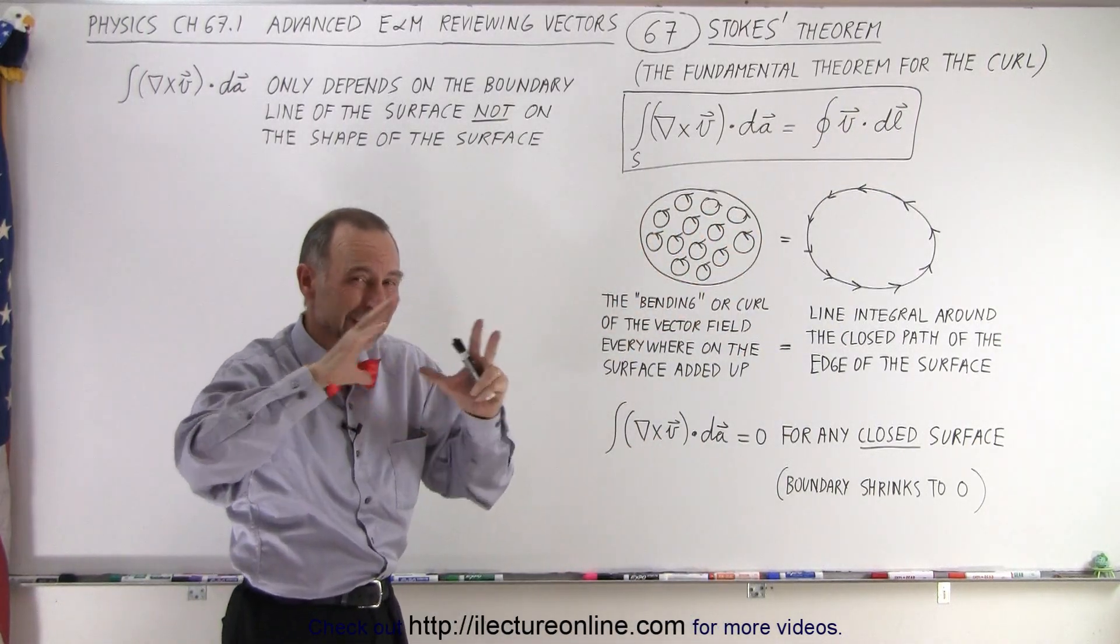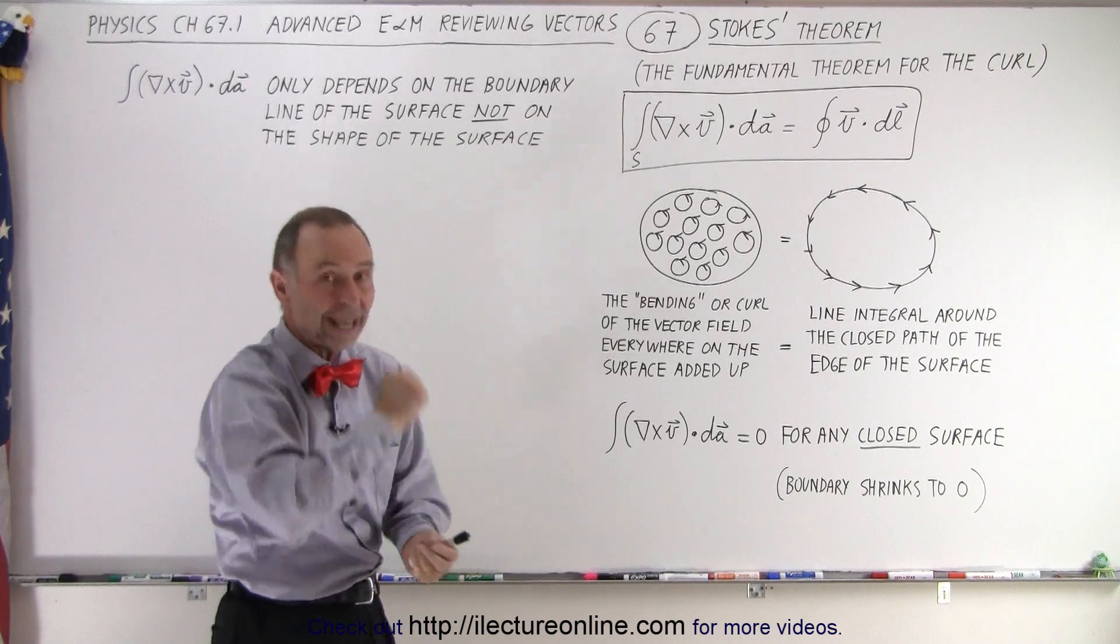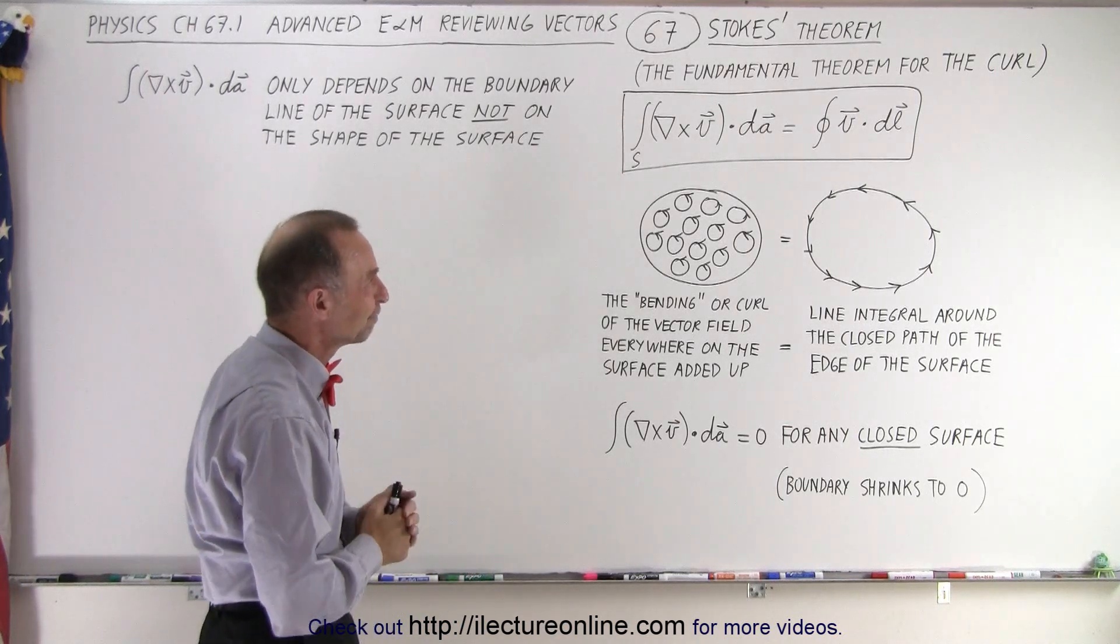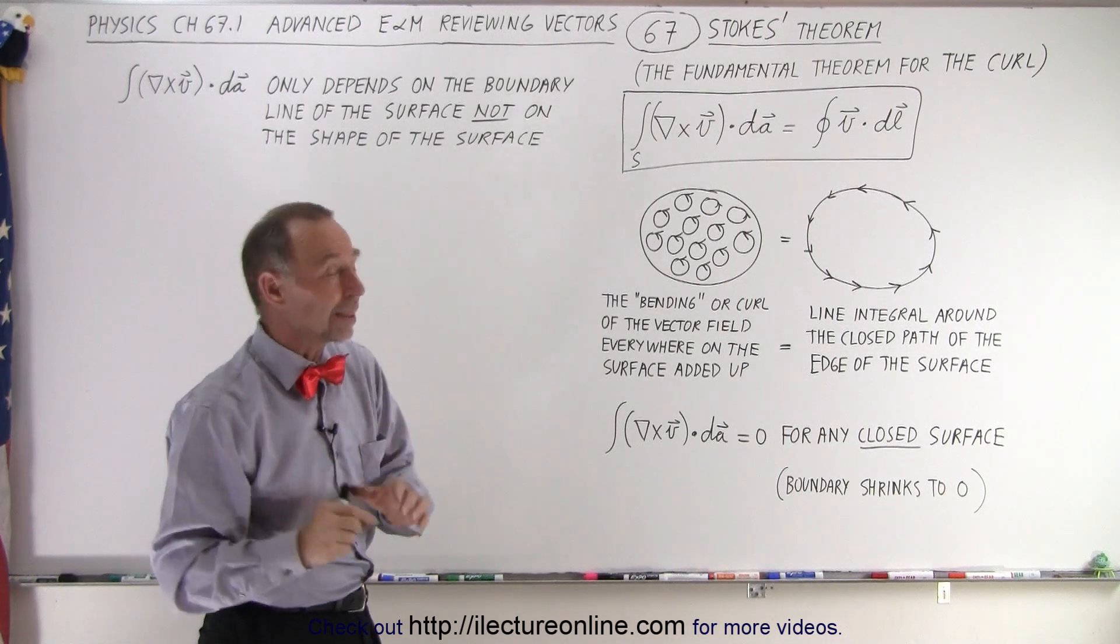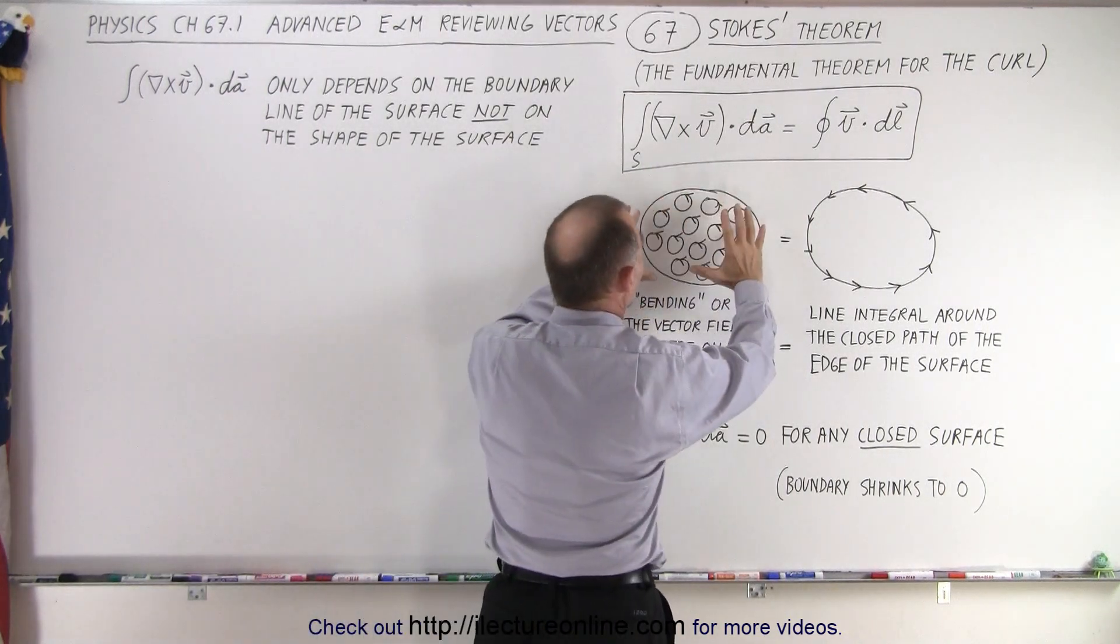that should equal the line integral along the edge of that surface. Now, it turns out that the surface cannot be a closed surface, otherwise you don't have an edge along which to integrate. So, what does that mean?